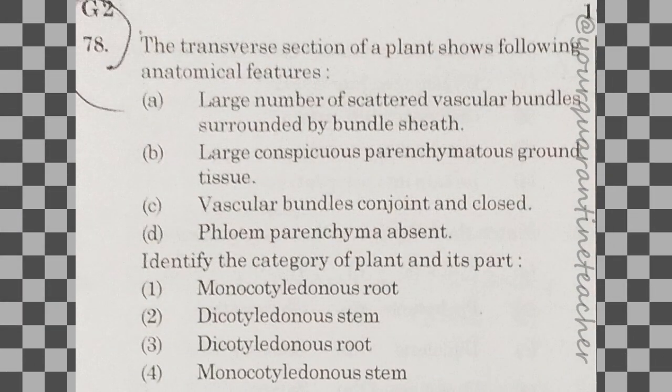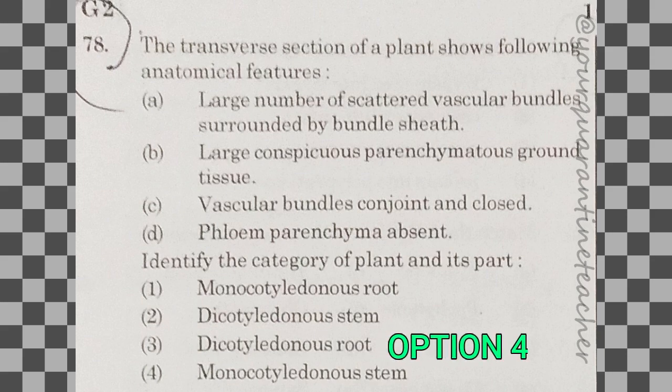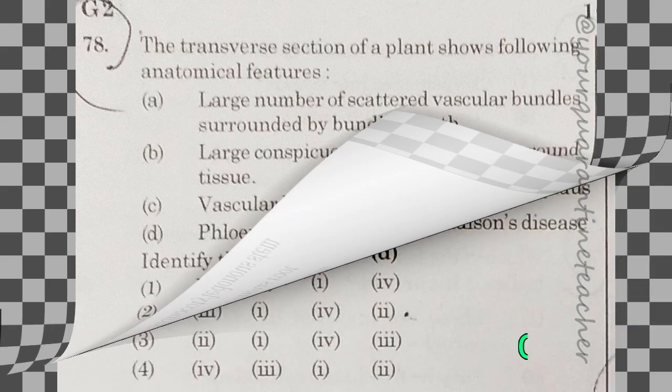78th question: the transverse section of a plant shows the following anatomical features. Identify the category of plant and its part. The answer is option 4 — monocotyledonous stem.